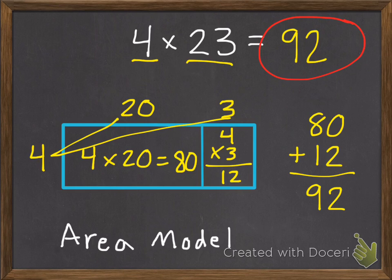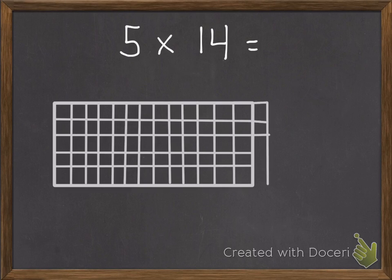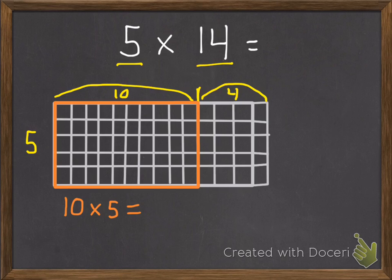I'm going to do one more example of each of these two strategies. One more using arrays: 5 times 14. Here's my array. I can fast forward so it goes a little quicker because that takes a while. So I have 5 rows on the left and right side, and 14 columns broken into 10 and 4. Then I can make two boxes out of this. So I have 5 by 10. The commutative property says I can switch those — so 10 times 5 or 5 times 10, either way — which is 50. So there are 50 boxes in that section.